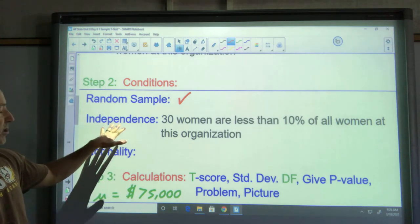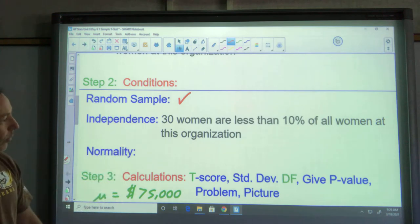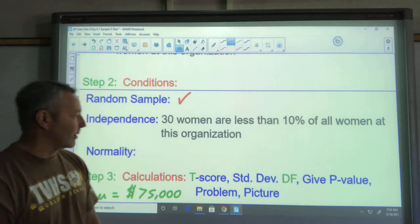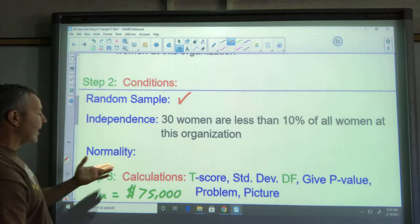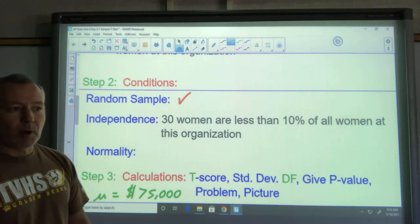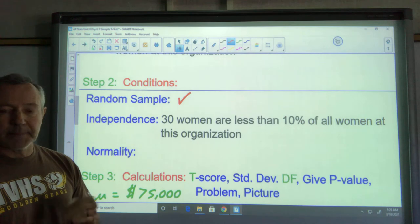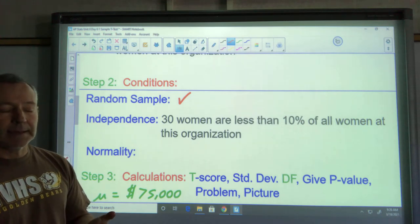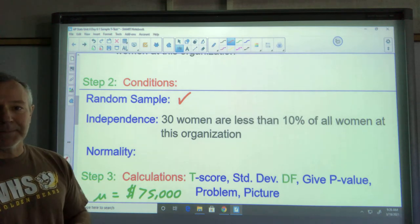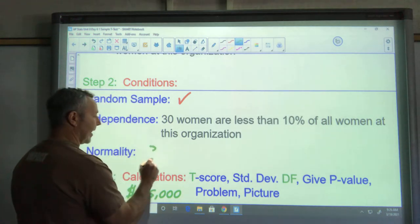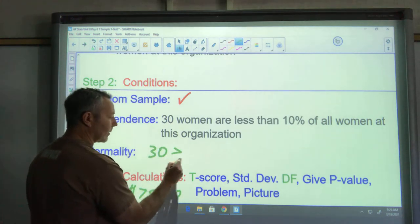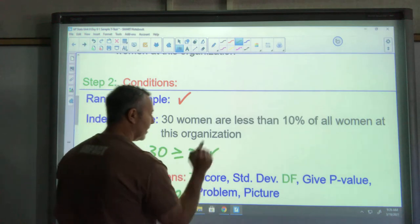10 percent condition or independence: we're assuming that 30 women are less than 10 percent of all women at the organization. And then normality, this is the mean problem so it's no longer n times p and n times q greater or equal to 10. It's nice and easy, it's n must be greater or equal to 30. In our case we have 30, that's our sample size, so I've met that condition.